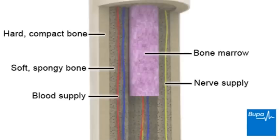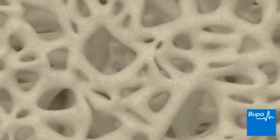Here we show a cross section of bone to label the different parts. The structure of bone makes it very tough. A bone will only break if it's put under a lot of force or twisted awkwardly. Your bone is made of a strong mesh of proteins and minerals such as calcium.